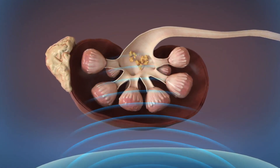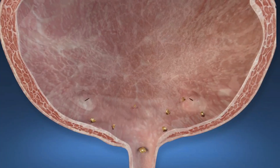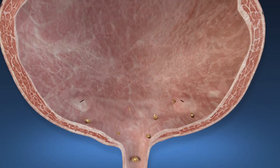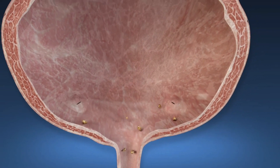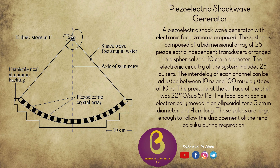The discharge of energy produces a vaporization bubble which expands and immediately collapses, thus generating a high energy pressure wave. The second type is piezoelectric. The piezoelectric effect produces electricity via application of mechanical stress.